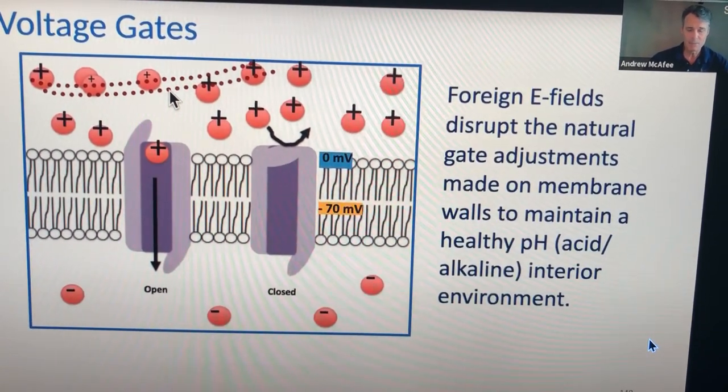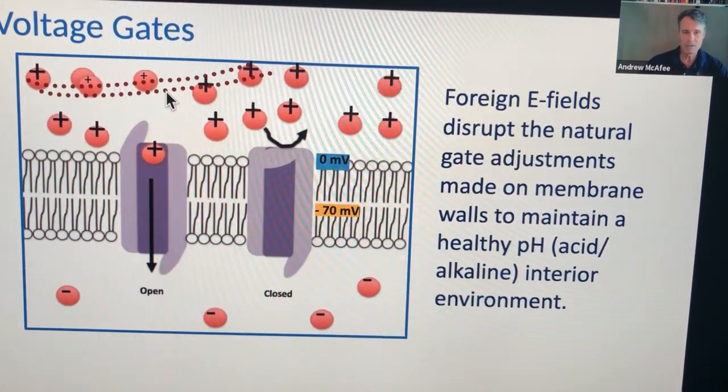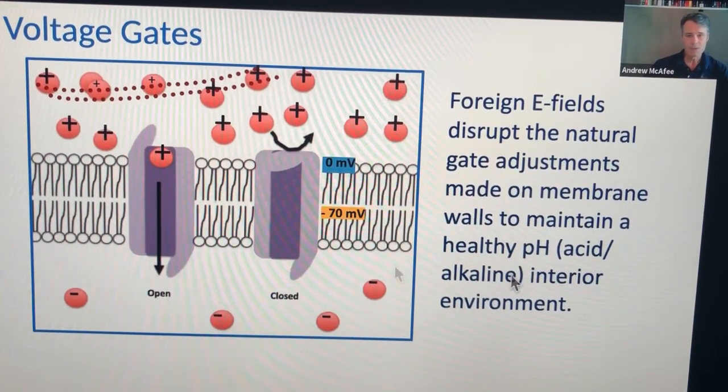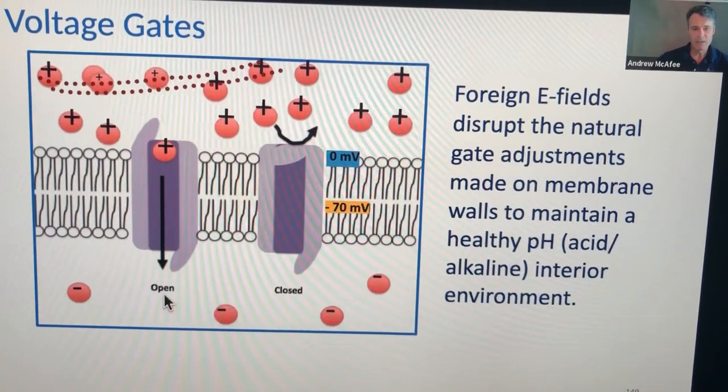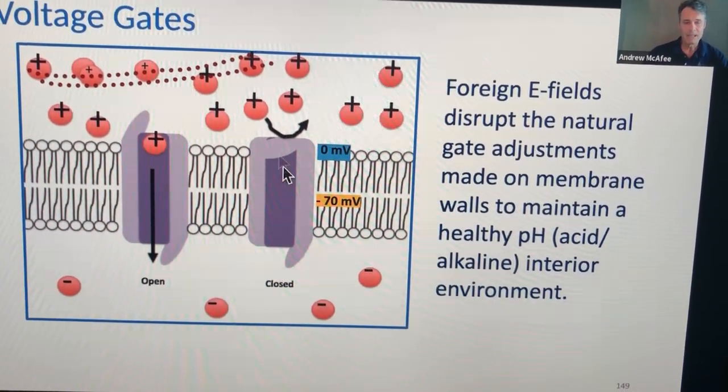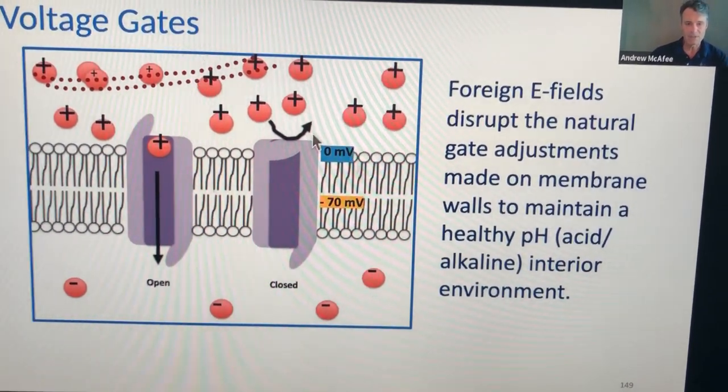The problem with current flow is it's a total deal breaker because it changes the paradigm and the standards so much. We're talking about inside the cell, healthy pH levels versus outside the cell, and these little gates get activated whenever the gradient is at a certain point.